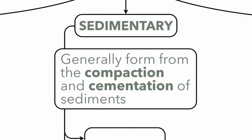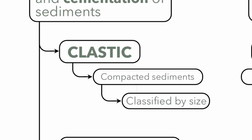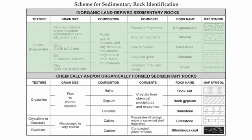The first type of sedimentary rock is called a clastic sedimentary rock. A clast is a fancy word for a sediment, so these are the types we've been discussing. Clastic sedimentary rocks form from compacted sediments and are generally classified according to their size. On the sedimentary rocks reference table, the clastic rocks are on the top half, also referred to as inorganic and land-derived. The columns show grain size, composition, comments, rock names, and map symbols.